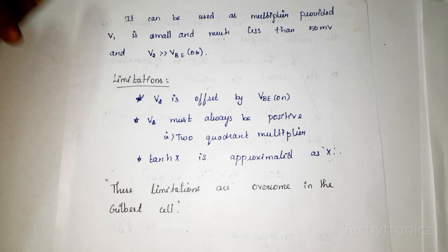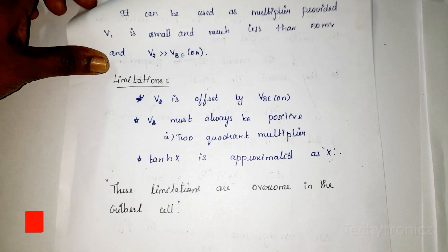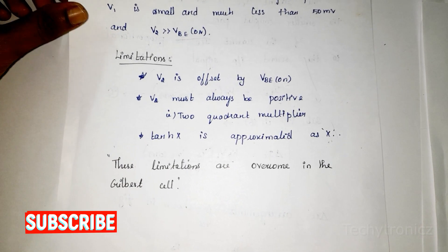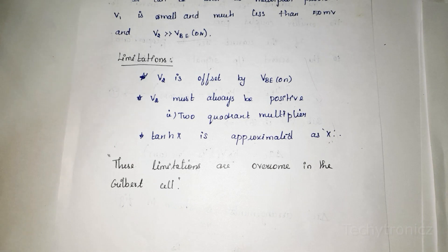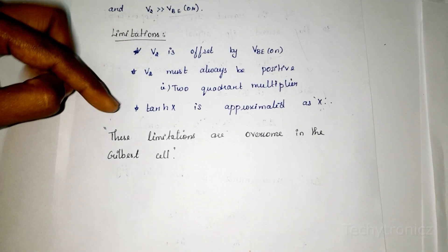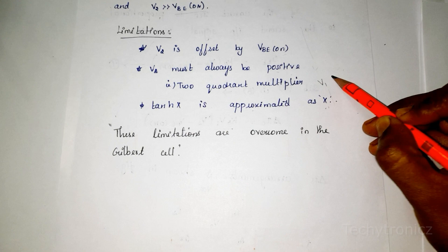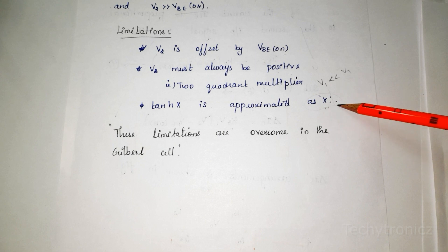There are some limitations of the emitter-coupled pair multiplier. First, V2 is offset by VBE(ON). Second, V2 must always be positive — this is a two-quadrant multiplier, so one voltage swings positive and negative while V2 stays positive. Also, the tanh approximation tanh(x) ≈ x is valid only when V1 is much less than VT. These are the main disadvantages of this circuit.